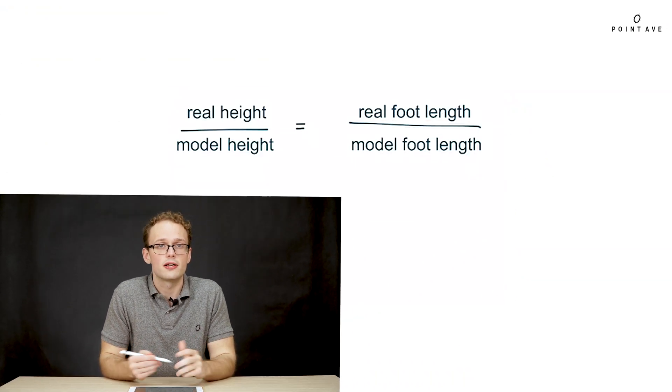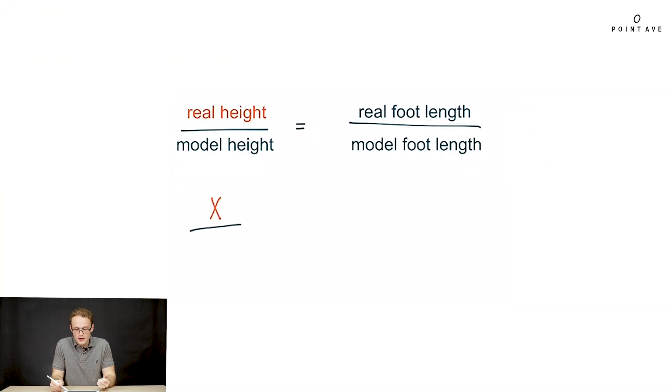So now that we have our proportion we just need to plug in the numbers and then solve. Step by step, the real height is the unknown that we're going to call x. The model height we're told is 4 inches. The real foot length is 4 feet but we're working in inches so we need to convert that to inches, that's times 12, and then that gives us 48 inches, the same as 4 feet.